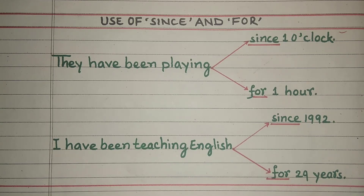Since that day, since then, since when, since childhood, since my birth, since I was born — these are all examples of 'since' used with a specific point in time.